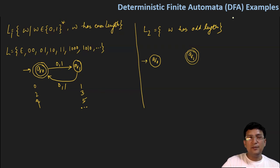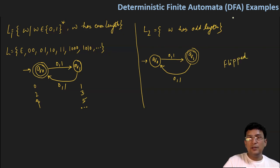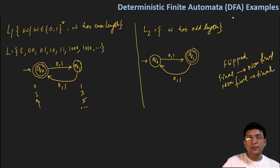I made the final state into a non-final state, and the non-final state into a final state. What this means is that I have flipped the states in the automata. We have just flipped the states — the state which was the final state has been converted to non-final, and the state which was non-final has been converted to final. From this I got the advantage that I have built the automata for language L2.